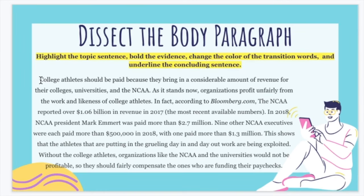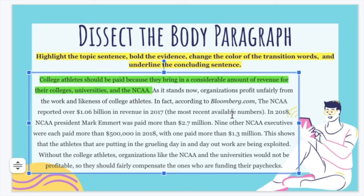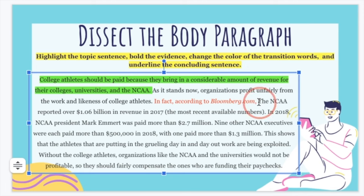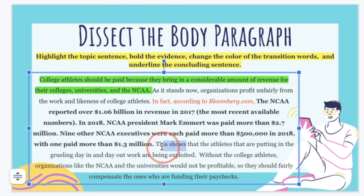So let's look at the topic sentence: 'College athletes should be paid because they bring in a considerable amount of revenue for their colleges, universities, and the NCAA.' I'm going to highlight that — that's the key argument of this paragraph, so everything in this paragraph should relate to it. This next sentence is an explanation sentence. Then here we have the evidence, which we're going to bold. The phrase 'In fact, according to Bloomberg.com' is a transition phrase, so we're going to change the color of that. The evidence covers how much the people at the NCAA are getting paid — I'm going to bold that. 'This shows' is also a transition phrase, so I'm going to change the color of that.